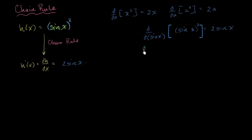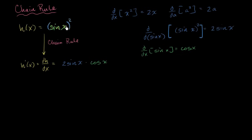That part is more straightforward and a little more intuitive. The derivative of sine of x with respect to x, which we've seen multiple times, is cosine of x. So times cosine of x. And there we've applied the chain rule: the derivative of the outer function (sine of x squared) with respect to sine of x is 2 sine of x, and then we multiply that times the derivative of sine of x with respect to x.